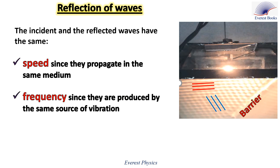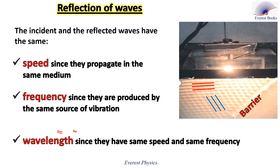The incident and reflected waves have the same frequency since they are produced by the same source of vibration — the straight bar dipper. Remember that v equals f times lambda. Since the incident and reflected waves have the same speed and the same frequency, they must have the same wavelength.